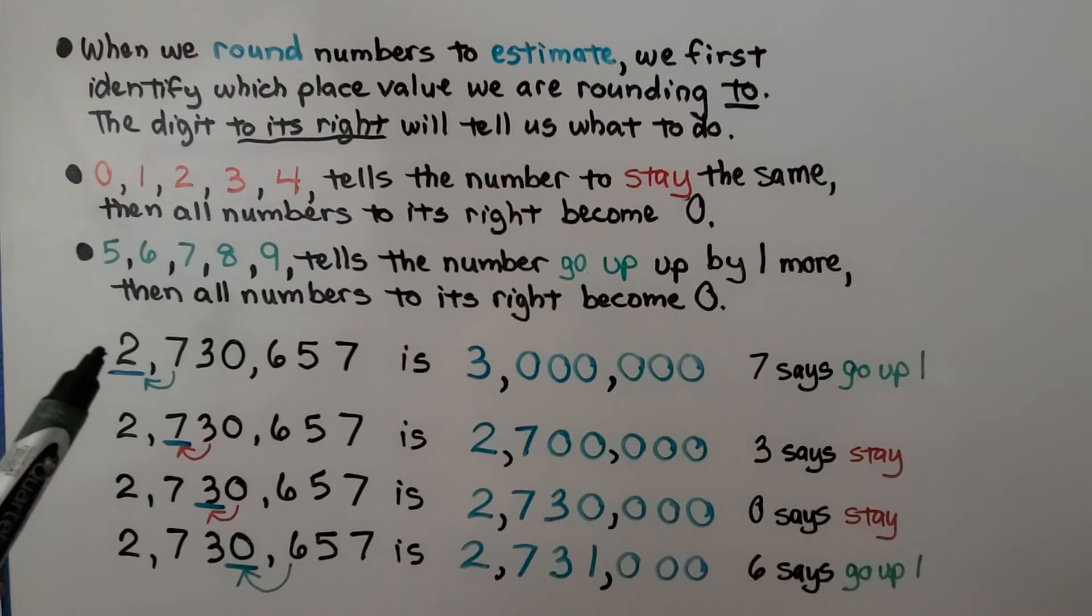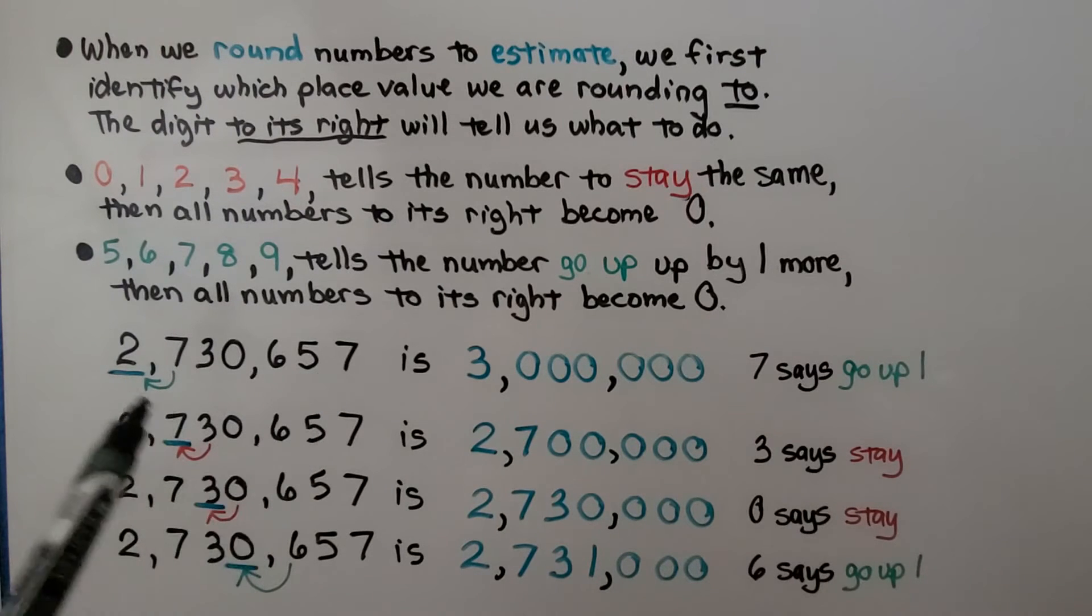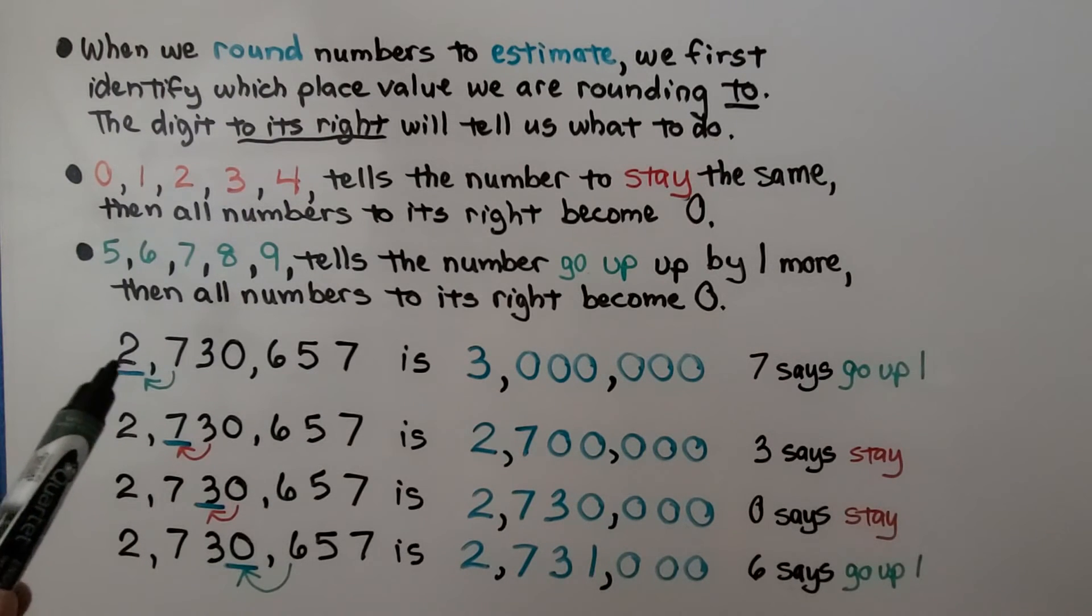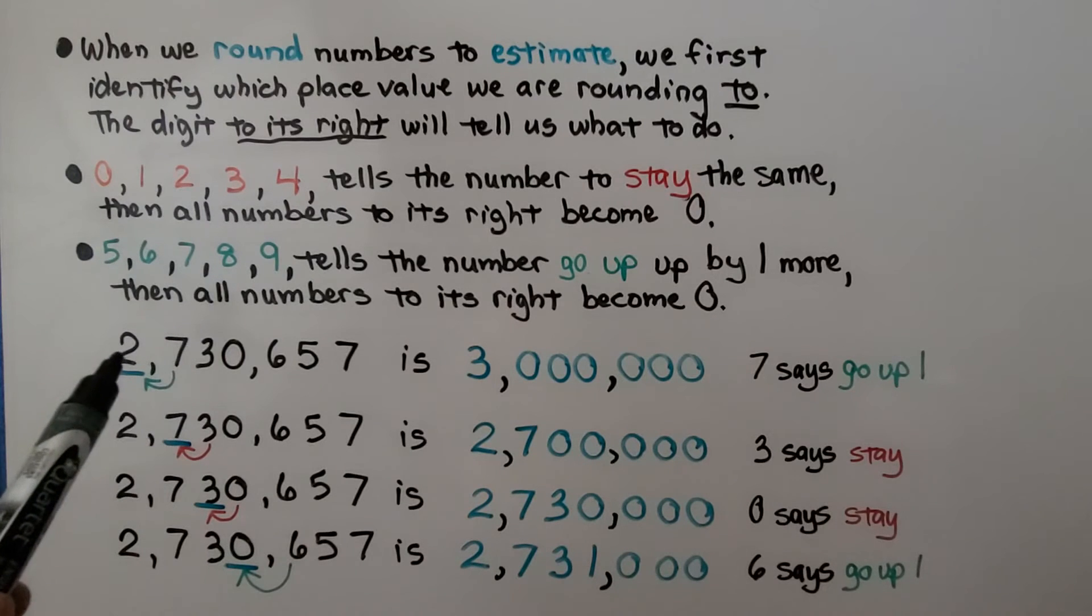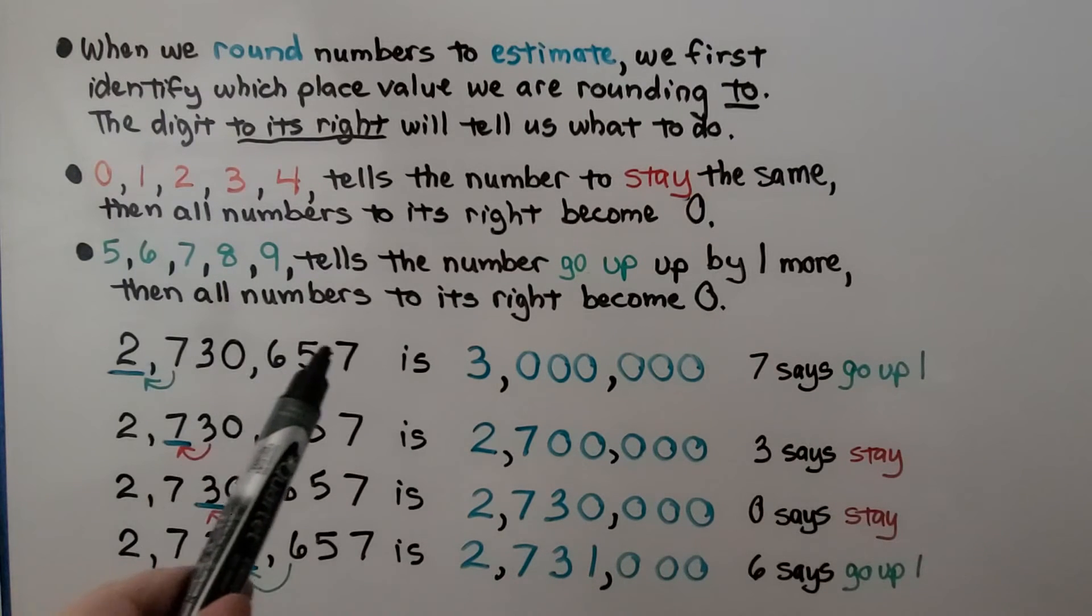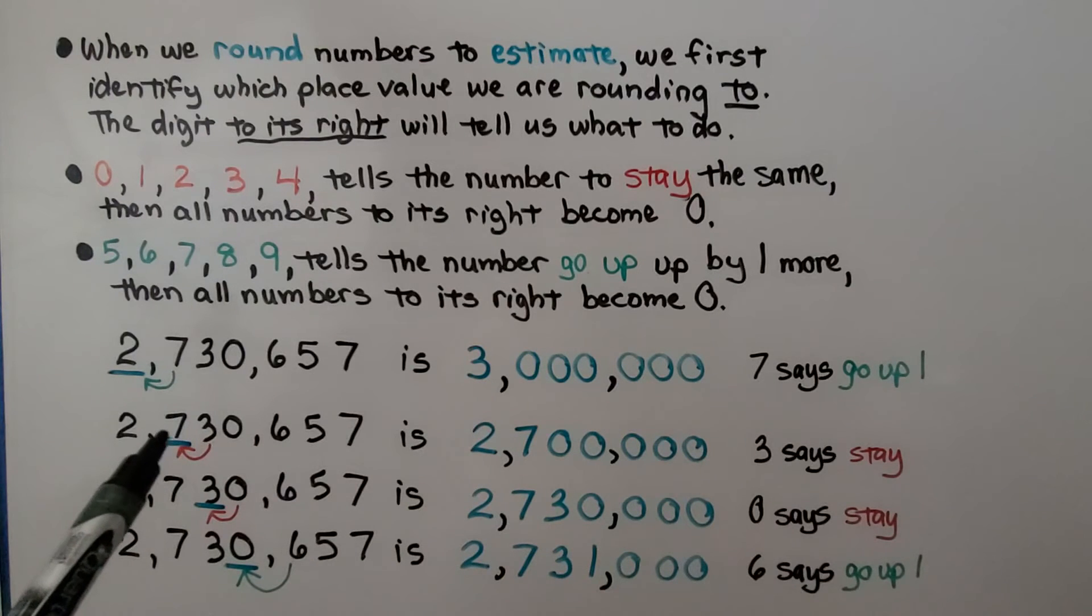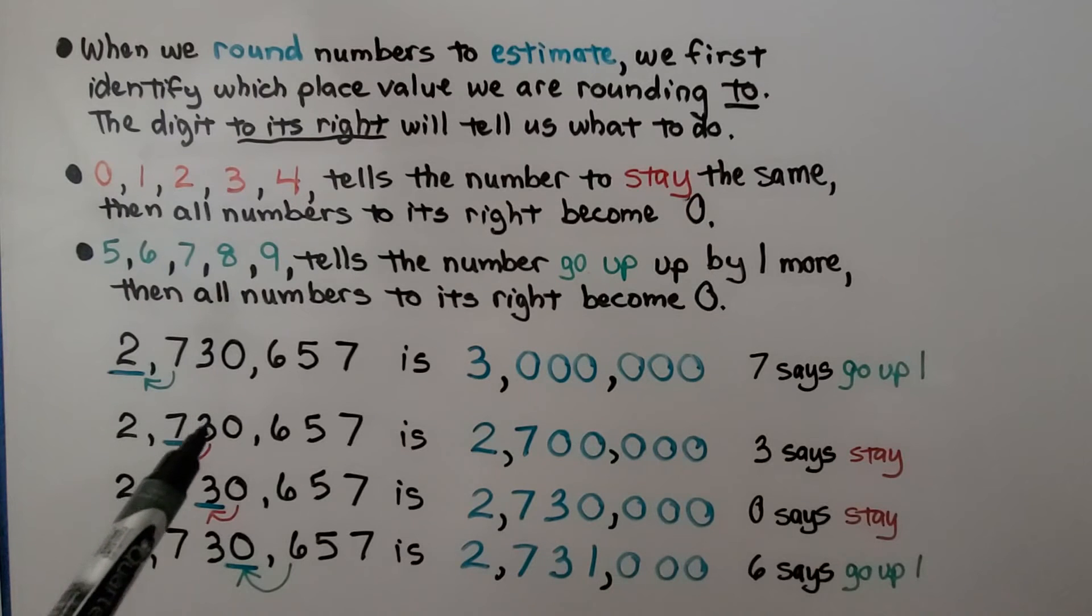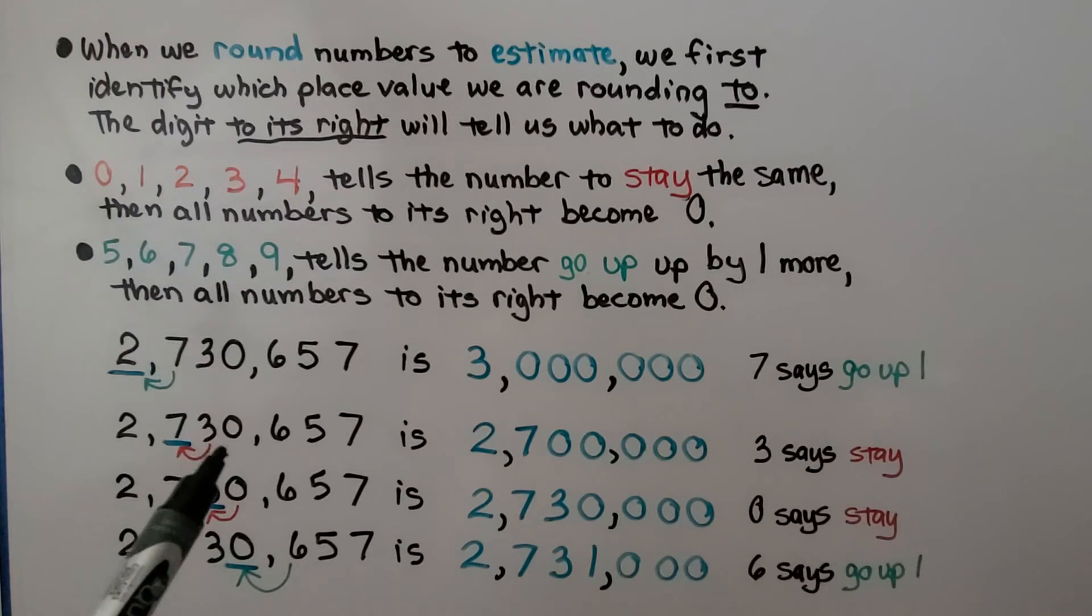So here we have 2,730,657. If we need to round this to the millions place, we look at the number to the right. It's a 7. 7 says go up. So the 2 is going to become a 3. And then they all become zeros. It rounds to 3 million. If we're rounding it to the hundred thousands place, we look to the right. It's a 3. 3 says stay the same. So we have 2,700,000.